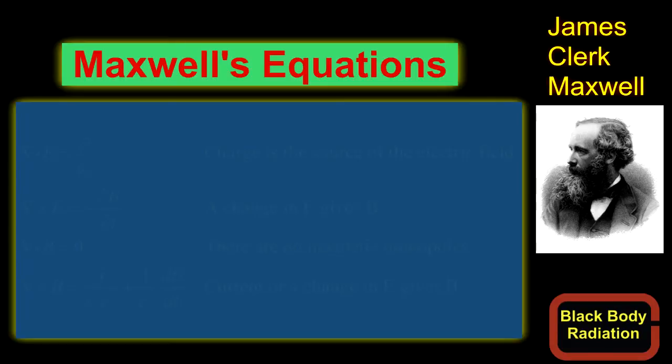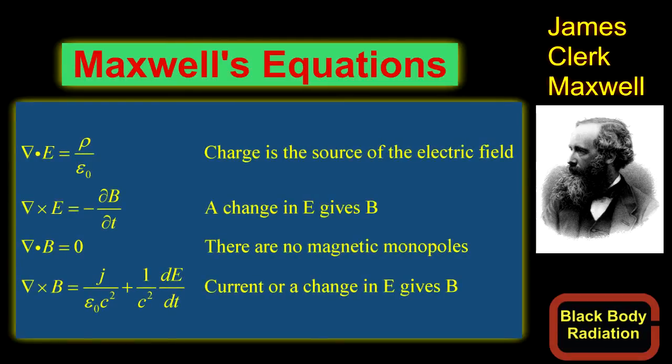In the 1800s, many scientists were conducting experiments on electricity and magnetism. The experimental evidence was famously summarized by James Clerk Maxwell in 1860 with four equations. Today, they are usually taught in this form.